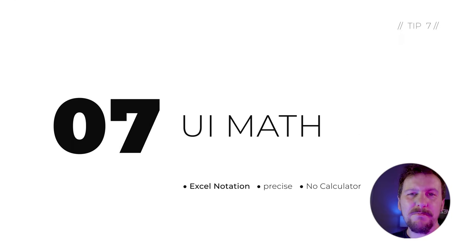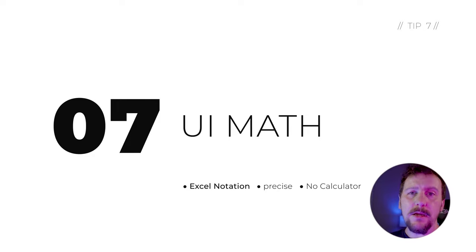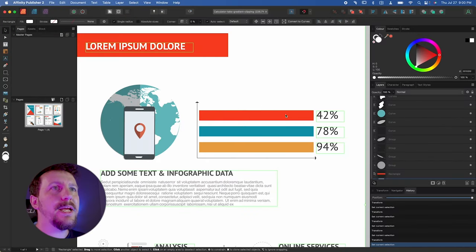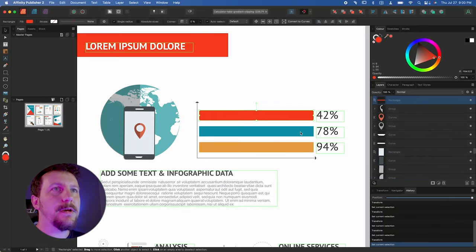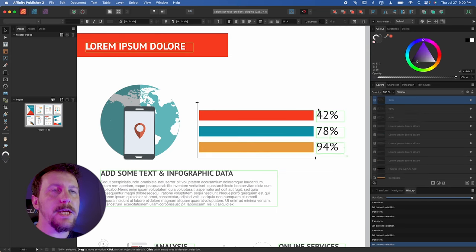For designers, math typically isn't our favorite subject, but we still end up having to do it quite a bit — especially when calculating layouts and making sure things are precise. But Affinity Publisher will actually do a lot of that math for you. Here in this infographic, I've got these three bars and I just want them to scale down and correspond to the percentage shown on the right.